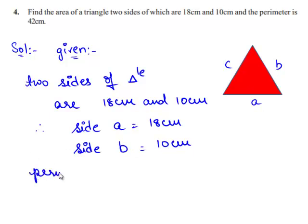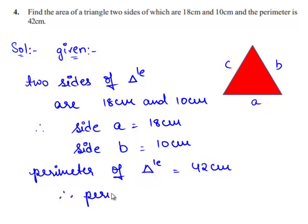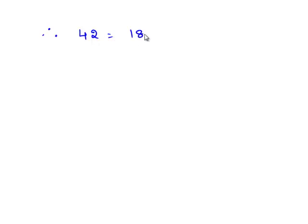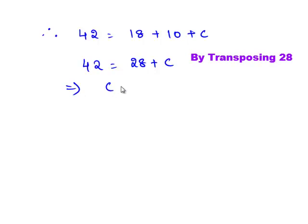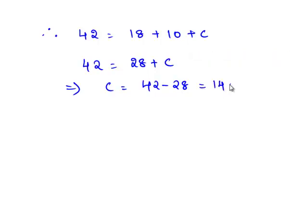And also given that the perimeter of the triangle is equal to 42 cm. The perimeter of a triangle is the sum of the lengths of all three sides. Therefore, perimeter is equal to A plus B plus C. So 42 is equal to 18 plus 10 plus C, which gives 42 equals 28 plus C. This implies C is equal to 42 minus 28, which is equal to 14 cm.